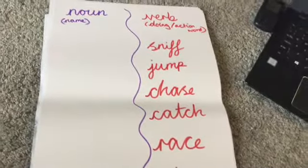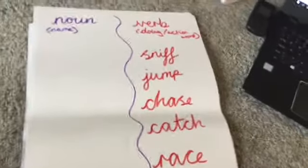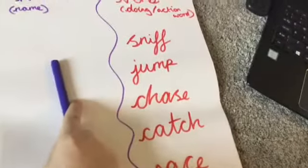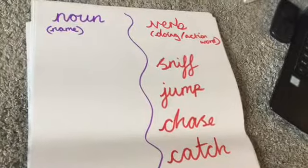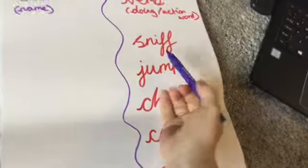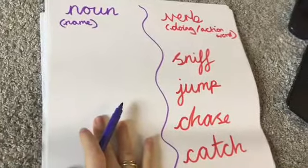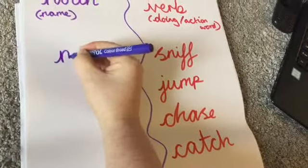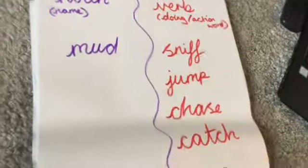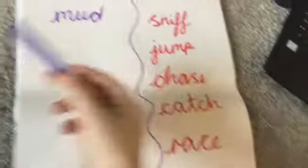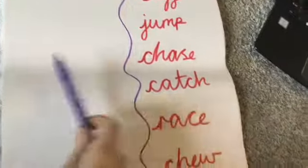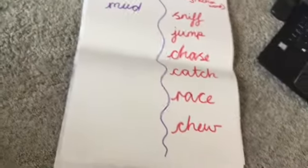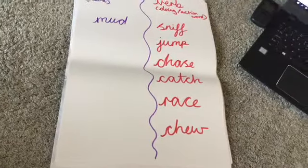What I want you to do now is see if you can come up with a name of something to match with a verb. I'll do the first one for you - sniff. What does a dog sniff? A dog could sniff mud. I want you to have a little go now and see if you can come up with something that they jump, something that they chase, something that they catch, something that they race, and something that they chew. Just pause now.